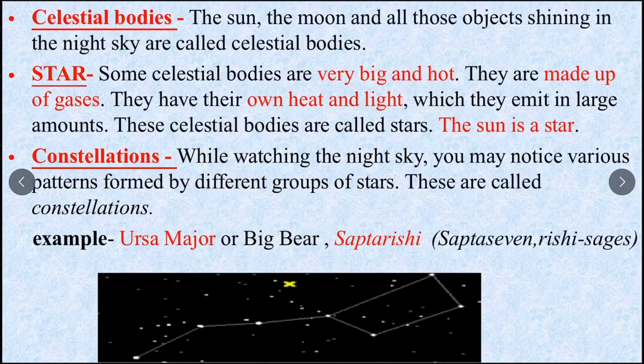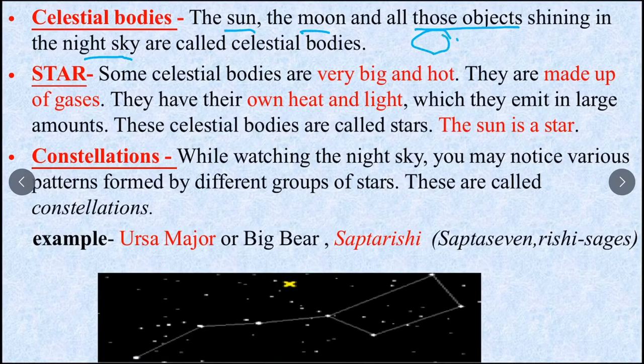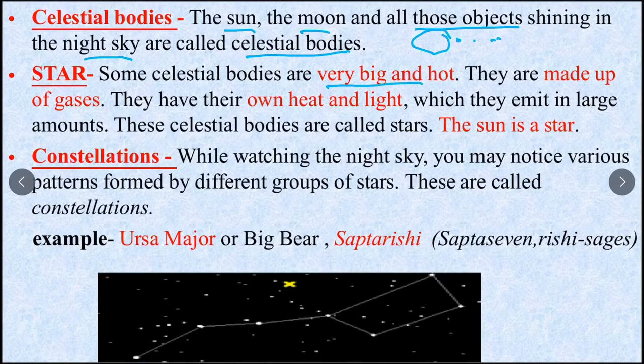Let's start now. We start with celestial bodies. What are celestial bodies? Sun, moon, all those objects shining in the night sky. What are stars? Some celestial bodies are very big and hot. They are made up of gases. They have their own heat and light. These celestial bodies are called stars. The sun is a star.